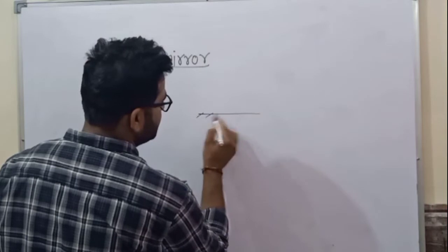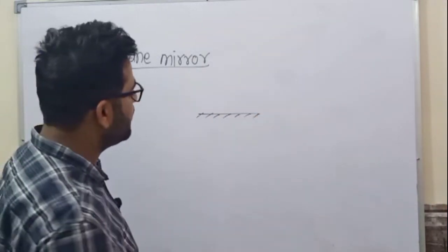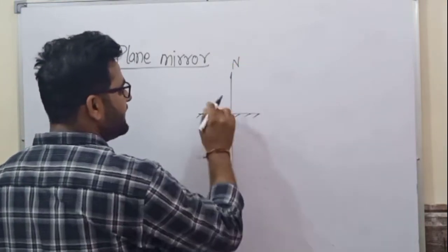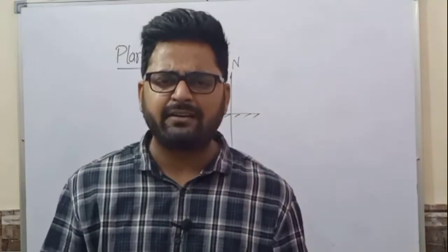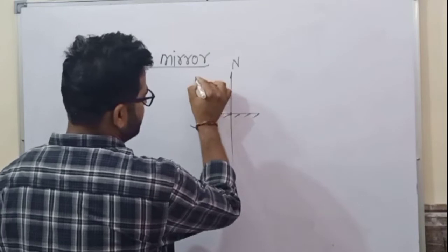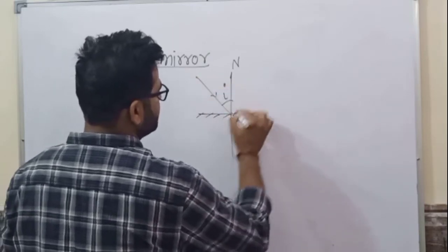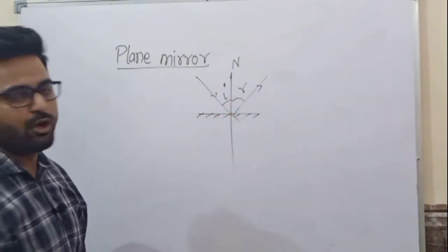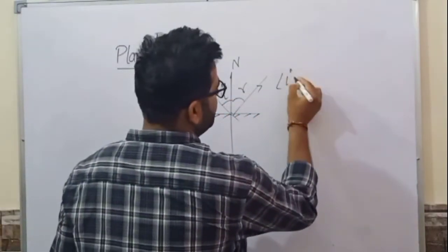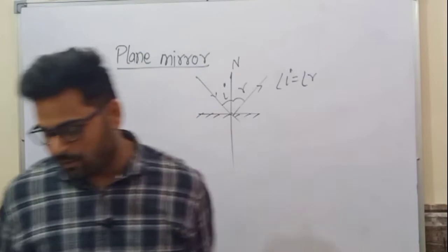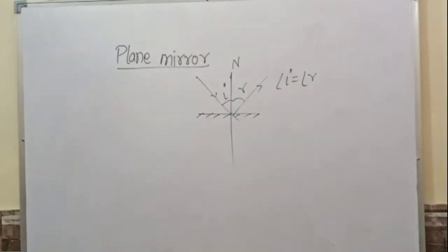This is the sign of a mirror. The normal is always perpendicular — at 90 degrees — to the reflecting surface. When the ray strikes here, this is the incoming ray and this is the outgoing ray. Angle i equals angle r — first law of reflection. The second law: the normal, incident ray, and reflected ray all lie in the same plane.